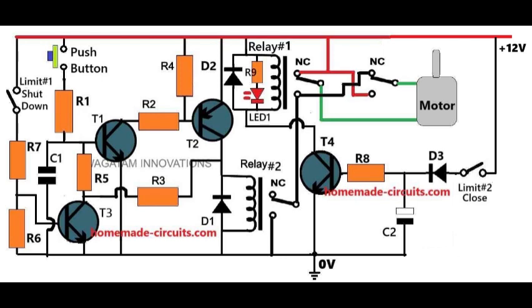The relay contacts shift back to the normally closed, NC, points, effectively cutting power to the motor. With the motor off, the door remains securely closed at its initial position. This entire process waits patiently until the push button is pressed again, initiating the cycle anew.